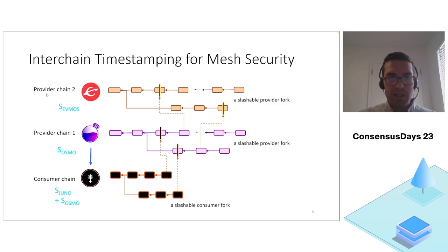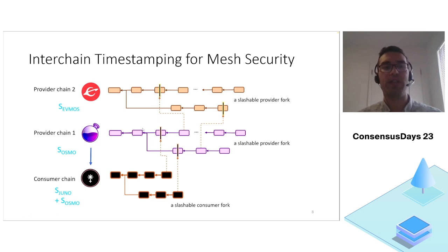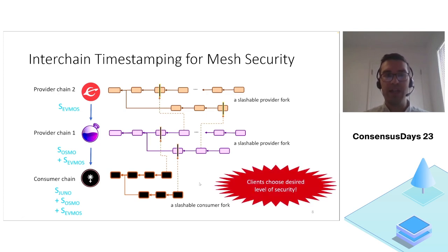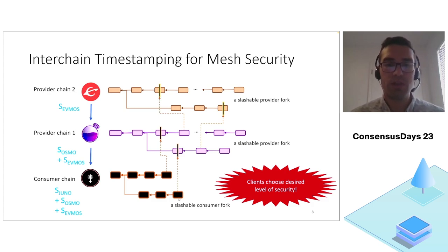For instance, clients not only wait until the consumer chain's timestamp is posted on the first provider chain, but also until the first provider chain's timestamp is posted on the second provider chain. As a result the consumer chain borrows economic security from both provider chains. This is a powerful observation: clients can choose their desired level of security. In an ecosystem where chains send IBC timestamps to each other, a client can determine how many chains to use as provider chains in order to boost its economic security.